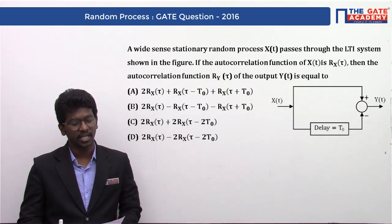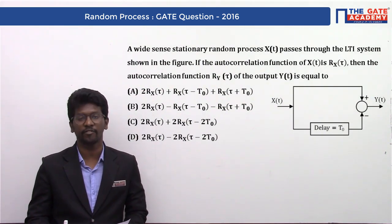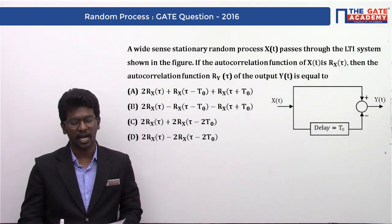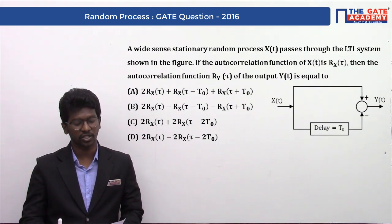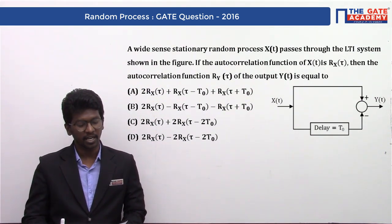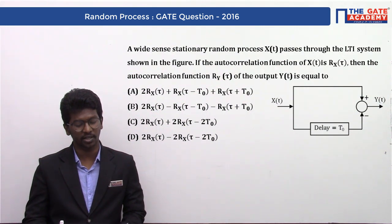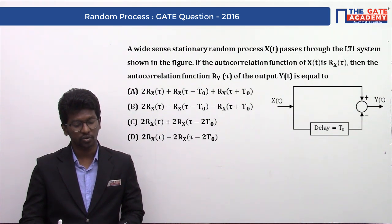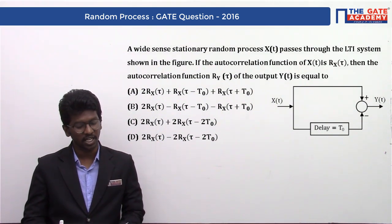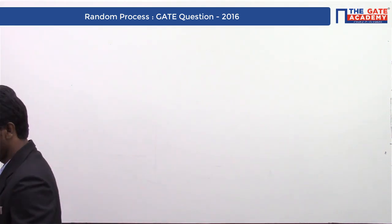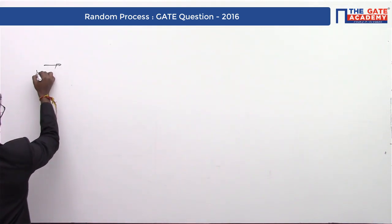The question is: a wide sense stationary random process x(t) passes through an LTI system shown in the figure. If the autocorrelation function of x(t) is Rx(τ), then the autocorrelation function of y(t) is? Option A: 2Rx(τ) + Rx(τ - T₀) + Rx(τ + T₀). Option B: 2Rx(τ) - Rx(τ - T₀) - Rx(τ + T₀). Option C: 2Rx(τ) + 2Rx(τ - 2T₀). Option D: 2Rx(τ) - 2Rx(τ - T₀).